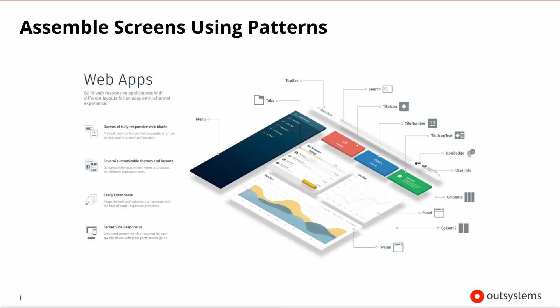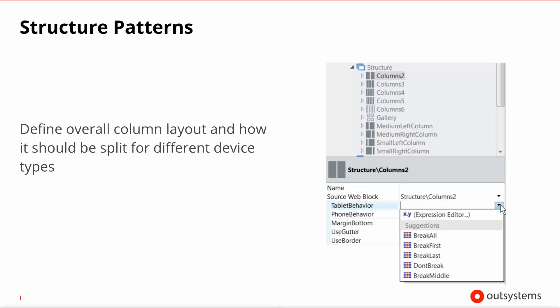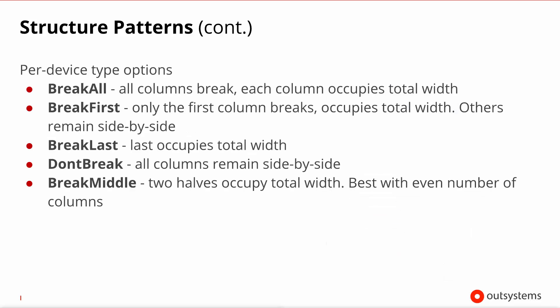Let's look at some of the stuff you will see inside Silk UI web. First you will find the aforementioned structure patterns. They define an overall column layout and how the screen should behave and split for different device types and sizes. As we can see in the example, if you use a structure of two columns — which will have two placeholders — you can state in the tablet and in the phone how these panels should be split if there is not enough screen estate. If the columns cannot all fit side by side on your device, you can opt to break at every column, on the first, on the last, not break at all and enforce scaling, or just break in the middle of whatever number of columns you're using.